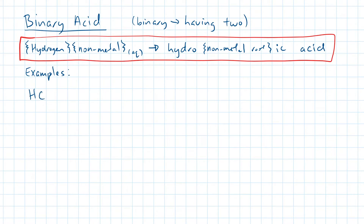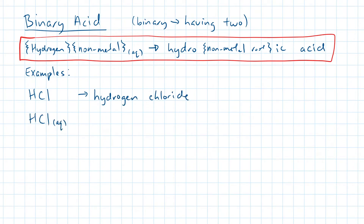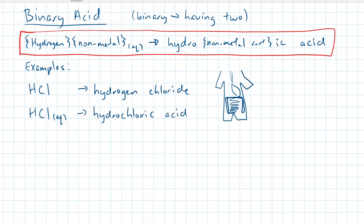Here we have hydrogen bonded with chlorine, but not dissolved in water, so this is just hydrogen chloride. The second formula looks very similar to the first, but this one is dissolved in water. Whenever a compound containing hydrogen as its cation is dissolved in water, it turns into an acid. So this chemical compound is called hydrochloric acid.